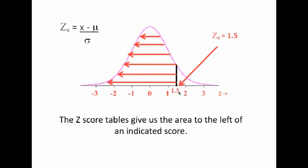For example, for this given Z-score of 1.5, then the area to the left of that is all of this area here. And that is the area that is going to be given to you by the Z-score table. So the Z-score tables give us the area to the left of a specific Z-score.